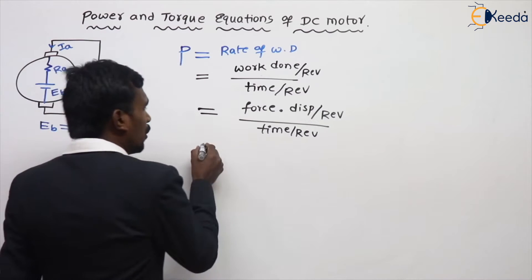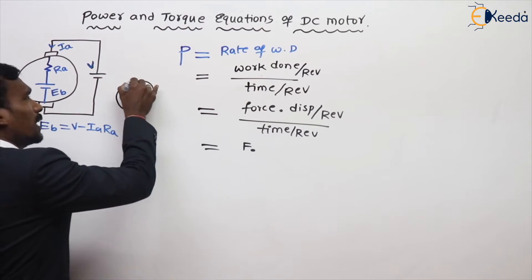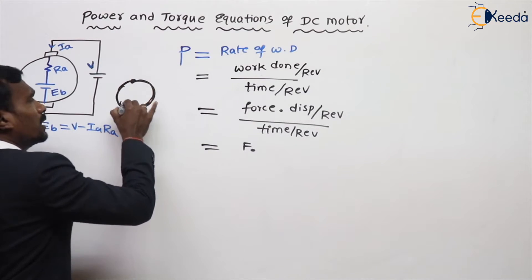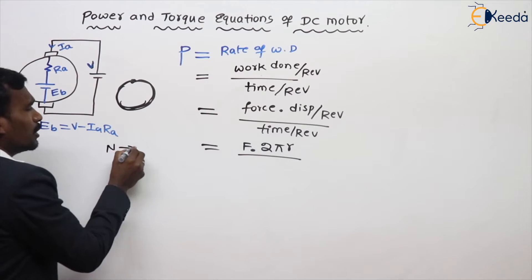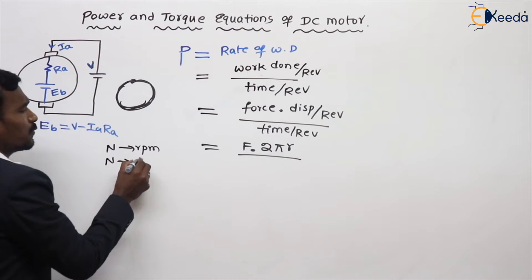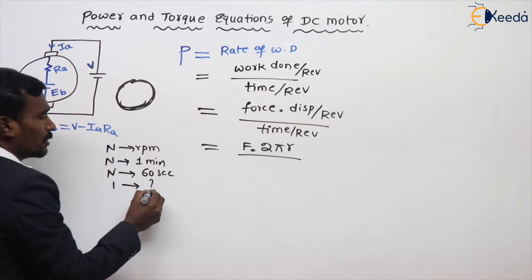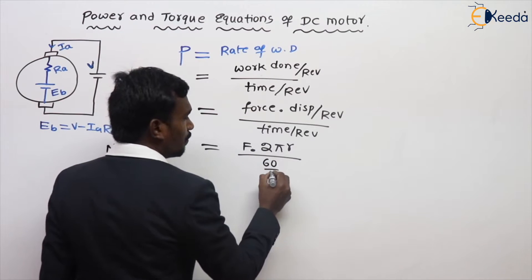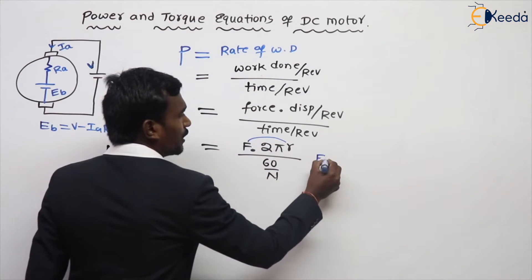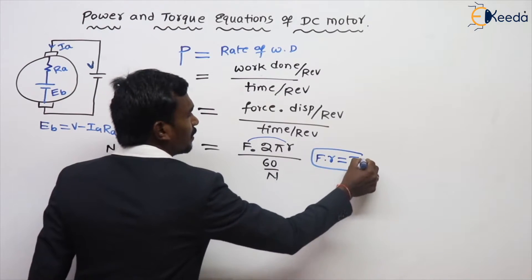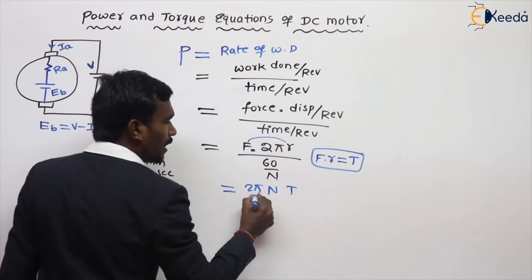Force is F. For one revolution, displacement is 2 pi r. In general, we know N revolutions per minute, which is N revolutions for 60 seconds, meaning one revolution takes 60 by N seconds. Force into radius is taken as torque T, so this becomes 2 pi N T upon 60.